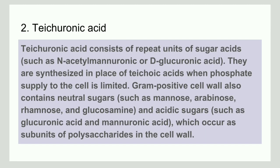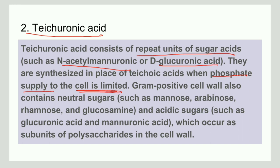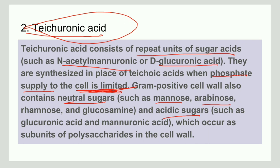Teichoic acid consists of repeated units of sugar acids such as N-acetylmuramic acid or D-glucuronic acid. They are synthesized when the phosphate supply to the cell is limited. Gram-positive bacteria have both neutral sugars, such as mannose and arabinose, and acidic sugars, such as glucuronic acid and mannuronic acid, which are subunits for the polysaccharides in the cell wall.